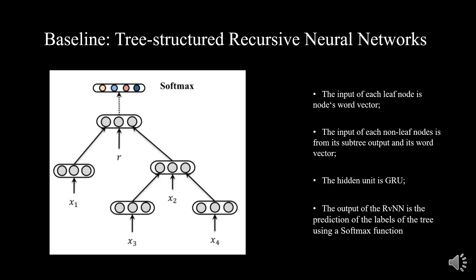The baseline model we use is tree-structured recursive neural networks. In order to distinguish it from RNN, we call this RVNN. The RVNN is similar to RNN in many aspects, but the difference is that RNN nodes are connected by time, while RVNN nodes are connected by a given tree. It also has the capability to deal with long-distance sequential input. The input of each leaf node is a word vector, and each non-leaf node takes both the node's word vector and the output of its subtree. The hidden unit we choose is GRU, and the output of RVNN is a label prediction using a softmax function, computed recursively over all tree nodes.